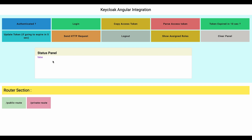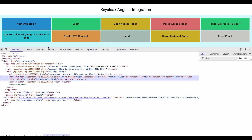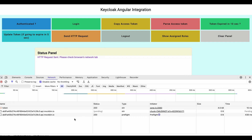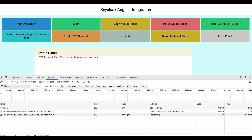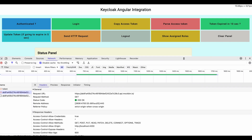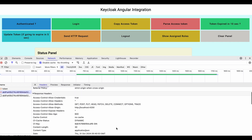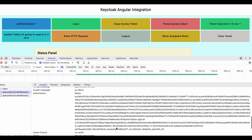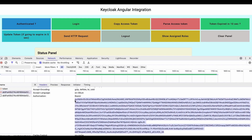I click 'Show Assigned Roles' — these are the assigned roles for this user. Now I check the network tab of my browser and click 'Send HTTP Request'. This sends a mock HTTP request to the MockBin API, and in the request headers section the access token is added as a bearer token.